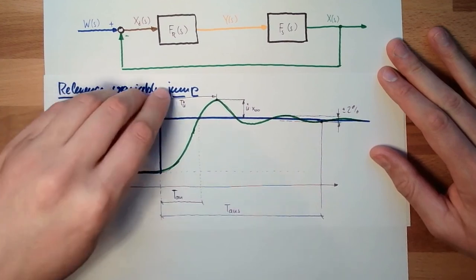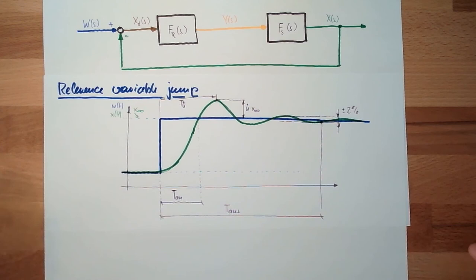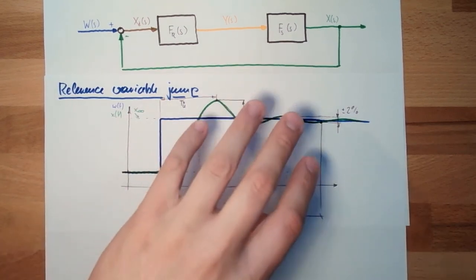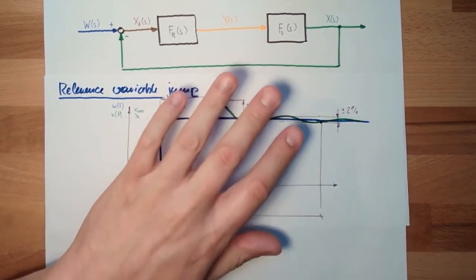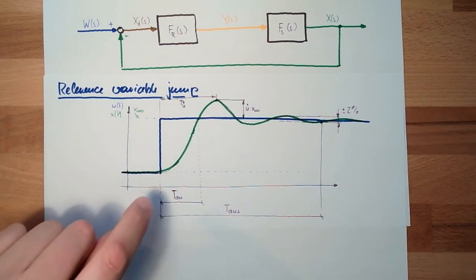Reference variable jump, is this not good? Is this bad? There are some criteria. Basically these are just parameters. If they are good or bad, there are some criteria, some integral criteria. In the next video we are going to talk about those integral criteria. Next time we are going to talk about quality criteria for the closed loop.